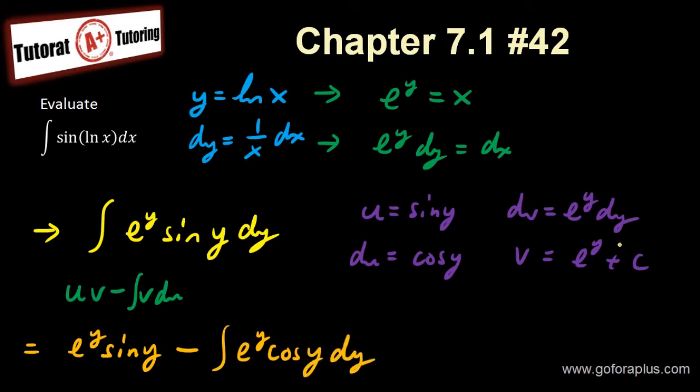And this whole thing is becoming u times v, e to the y sine of y, minus integral of e to the y du, which is cos of y dy. So I have something like this. I forgot the dy here. Don't forget about that.